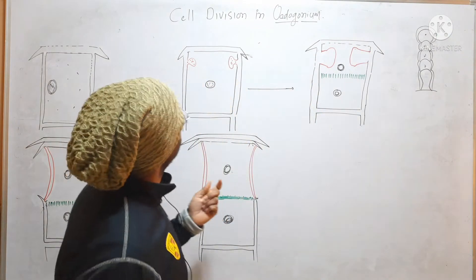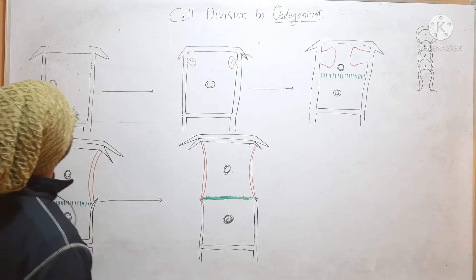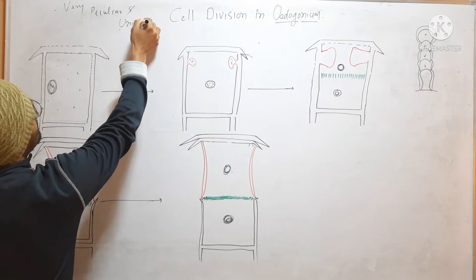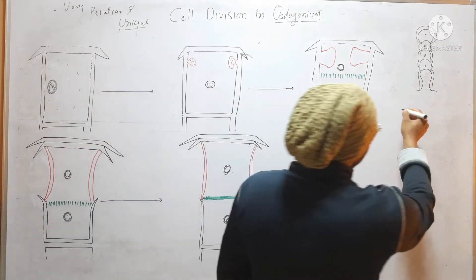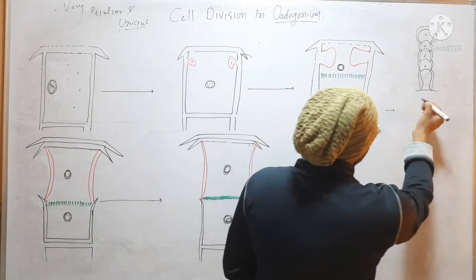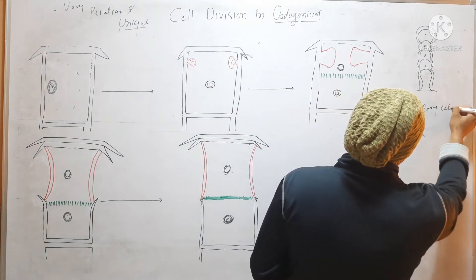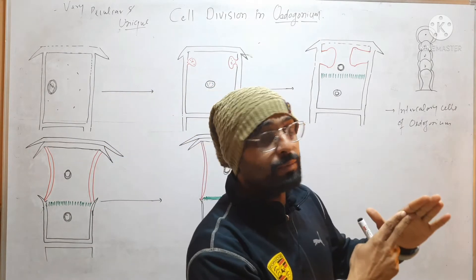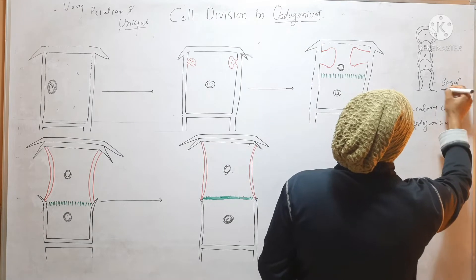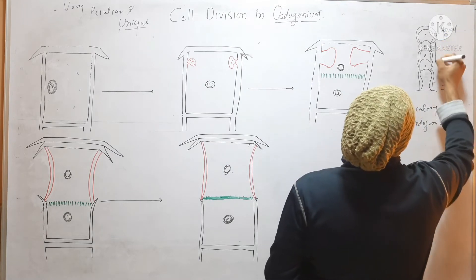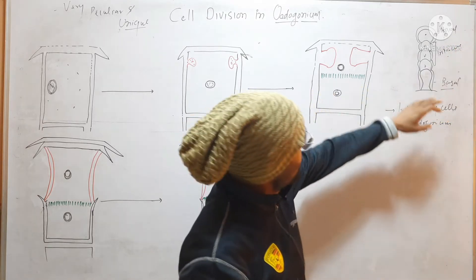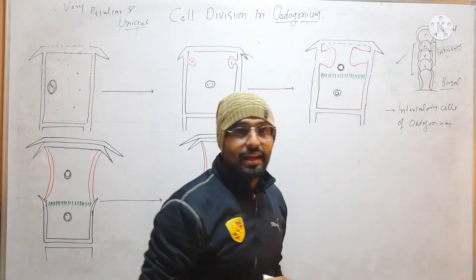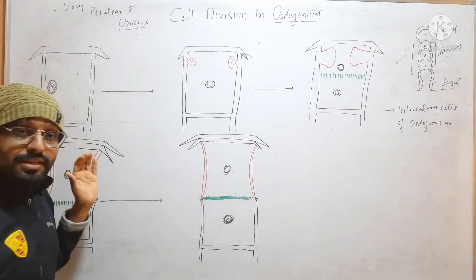Hello friends. In this video we will discuss cell division in Oedogonium. Cell division in Oedogonium is a very peculiar and unique type. It always occurs in intercalary cells of Oedogonium. The filament of Oedogonium has three different types of cells: basal cell, apical cell, and intercalary cell. The cells that lie between apical and basal cells are called intercalary cells. So cell division always occurs in these intercalary cells.